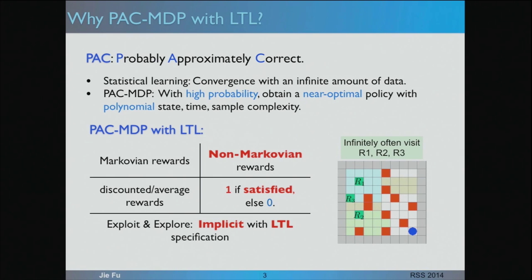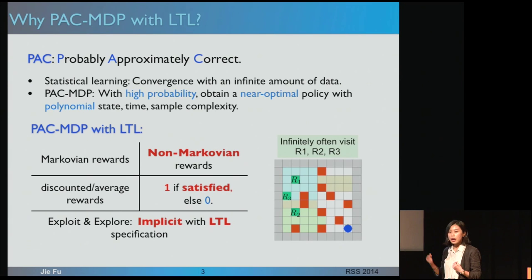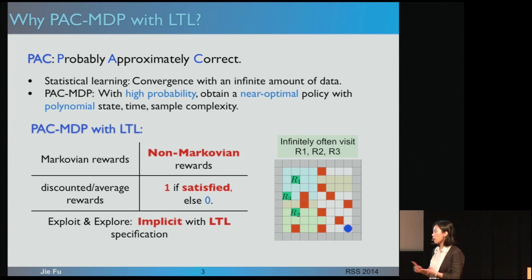We consider the PAC-MDP method — PAC stands for probably approximately correct. Compared to statistical learning, PAC methods ensure with high probability we can obtain a near-optimal policy with polynomial time, space, and sample complexity. However, extending PAC-MDP with linear temporal logic constraints is not straightforward because the reward structure for temporal logic is different from the traditional reward structure in PAC-MDP. In our example, a robot as a blue dot tries to visit regions R1, R2, and R3 in order while avoiding red cells. We reward behavior not based on which state the robot is in, but by looking at the infinite state history to see if it satisfies the temporal logic constraint — reward 1 if it satisfies, reward 0 if not. This yields a non-Markovian copying property and a non-discounting or average reward structure.